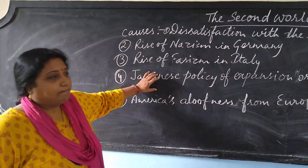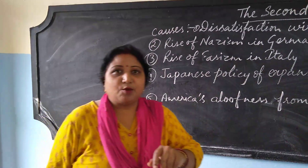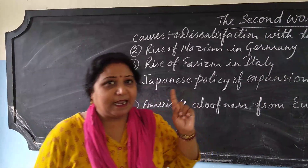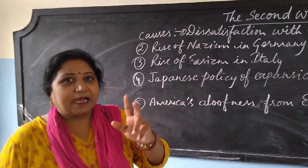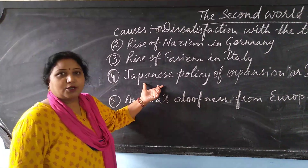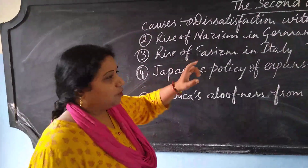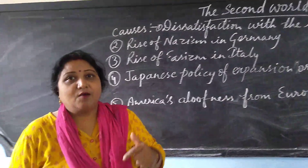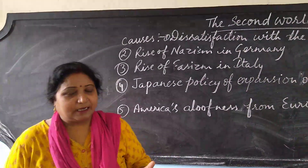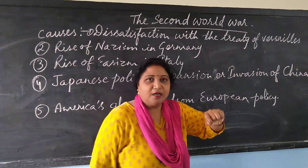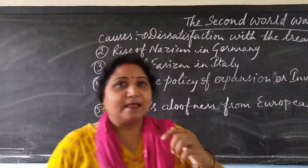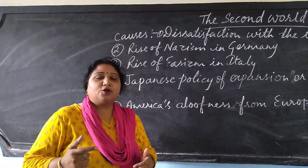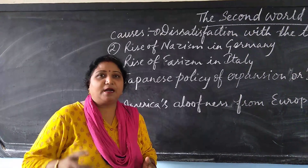This expansion policy made Japan sign a treaty known as the Rome-Berlin-Tokyo Axis. Rome means Italy, Berlin means Germany, and Tokyo means Japan. So Japan, Germany, and Italy entered into the Rome-Berlin-Tokyo Axis. Japan got more concessions after the First World War but still wanted to aggress more territories, attacking China in 1931 and capturing Manchuria, and again in 1937 capturing more territories, leading to this Axis agreement.